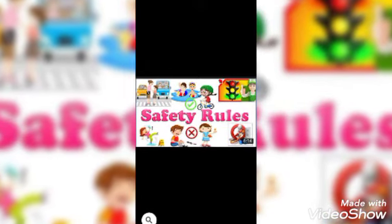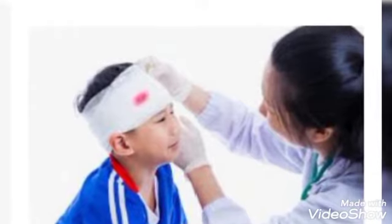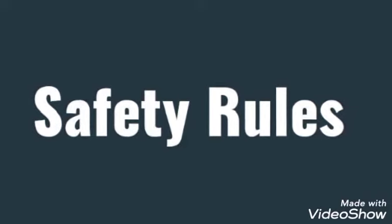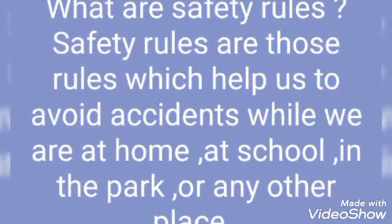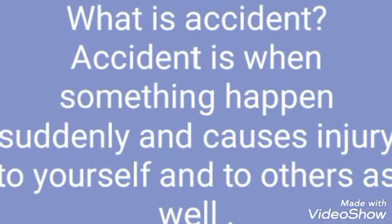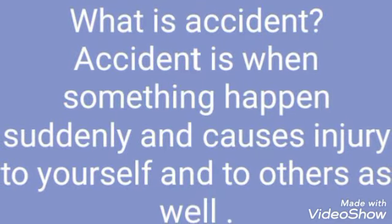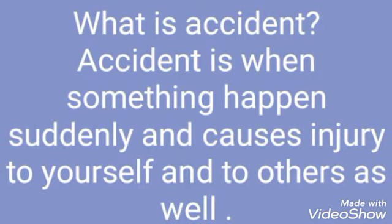Hello students, today we are going to start a new chapter: safety rules. Nobody wants to get hurt, right? Safety rules are those rules which help us to avoid accidents while we are at home, at school, on the road, in the park, or any other place. An accident is when something happens suddenly and causes damage or injury to yourself and to others as well. Accidents can happen anytime, anywhere.